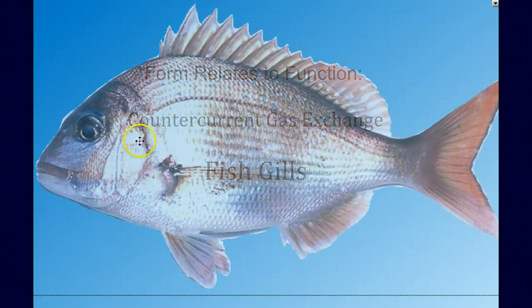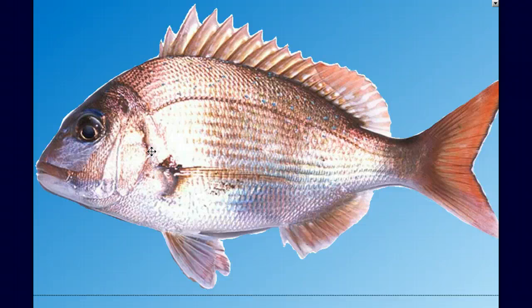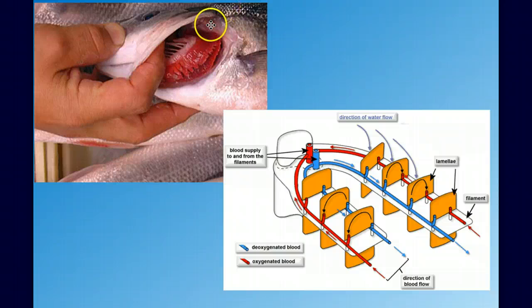Fish use gills to extract oxygen from the water and release carbon dioxide. In this picture, we can see someone lifting up the operculum of a bony fish. We can see this gill arch with these bright red gills. These gills are so red because there's lots of blood vessels running through them, and these highly folded, very thin membranes make for a very good gas exchange surface.